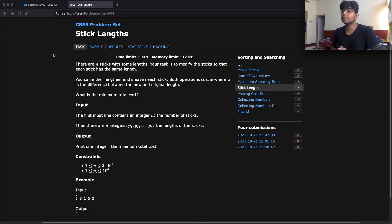In this question we're going to be given n sticks and these n sticks have some length, and the task is to modify the sticks so that each stick has the same length at the ending. Now the way we modify the sticks is by either lengthening or shortening each stick. Each of these operations is going to have a cost of x.